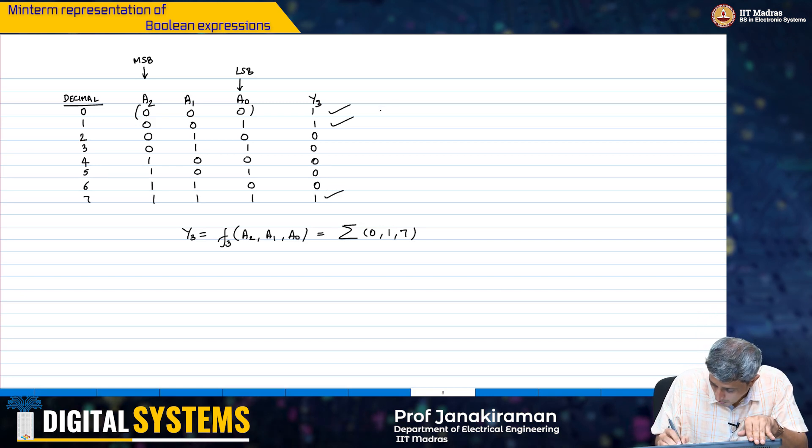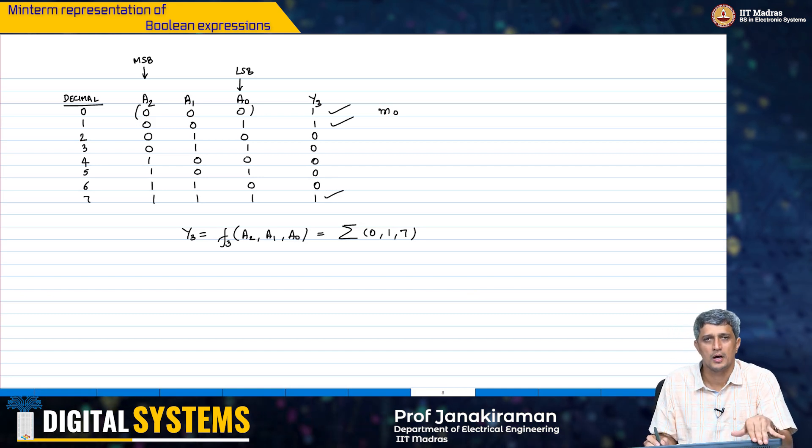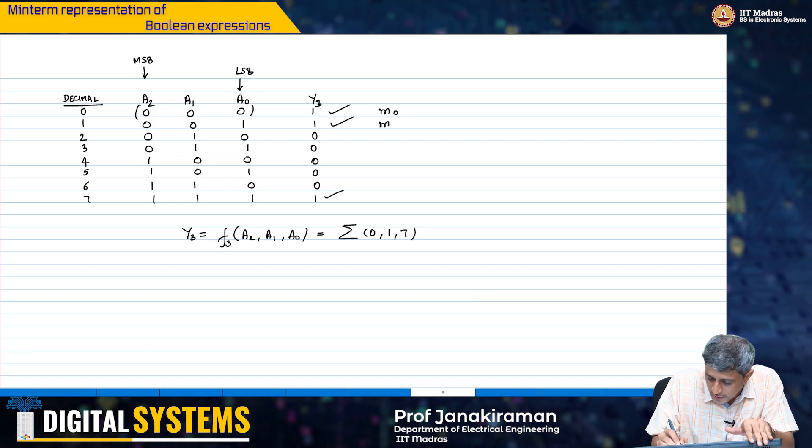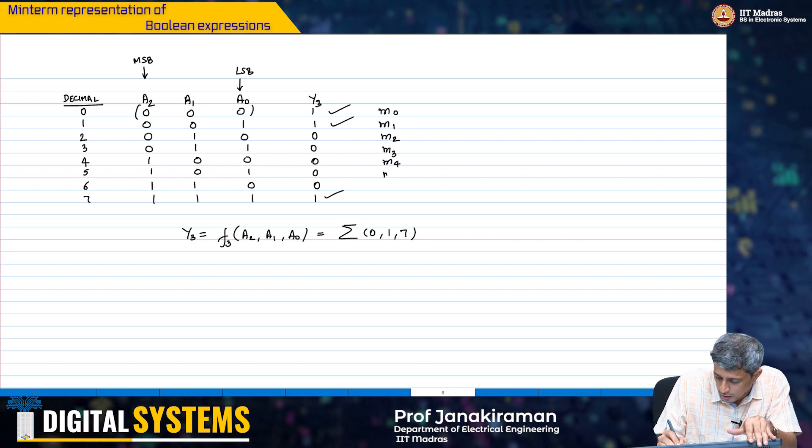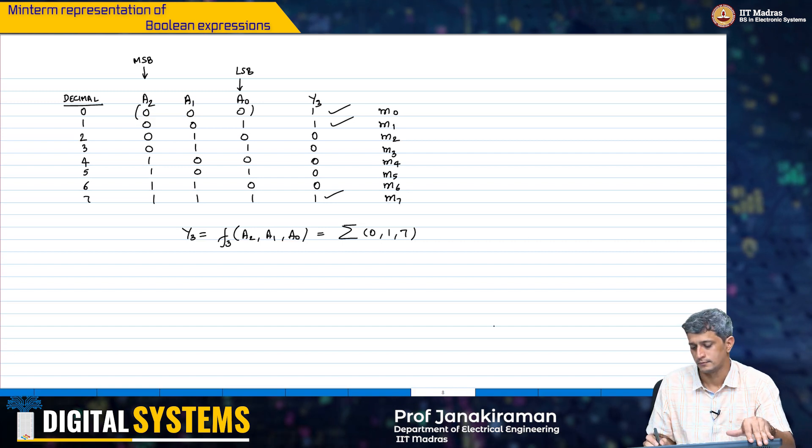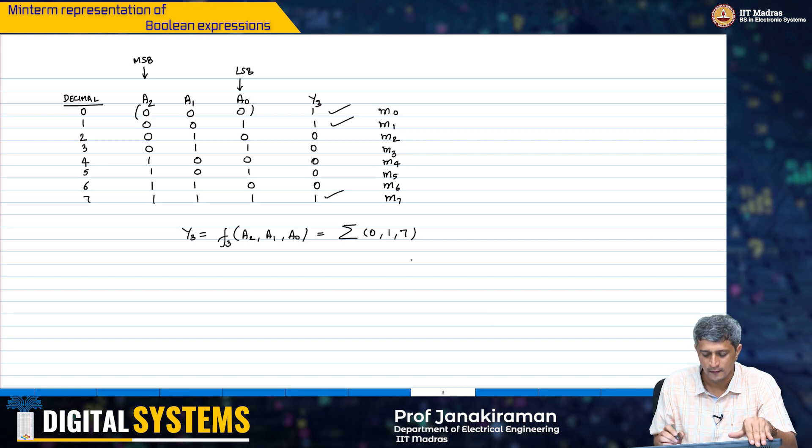Now, this is what I am going to represent as a min term. I am going to represent this with a small m, suffix 0. This is m1, m2, m3, m4, m5, m6, m7. These min terms basically correspond only to the inputs, do not look at the outputs.